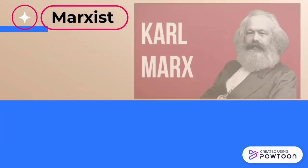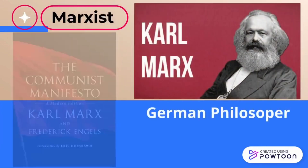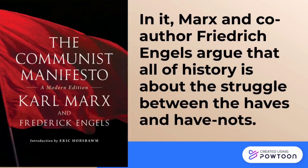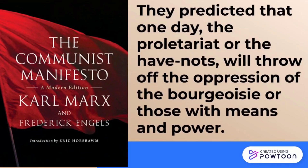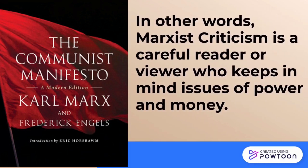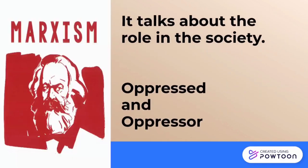Marxist gets its name from Karl Marx, the German philosopher who wrote the Communist Manifesto. Marx and co-author Friedrich Engels argue that all of history is about the struggle between the haves and have-nots. They predicted that one day, the proletariat, or the have-nots, will throw off the oppression of the bourgeoisie, or those with means and power. In other words, Marxist criticism is a careful reader or viewer who keeps in mind issues of power and money. It talks about the role in the society.